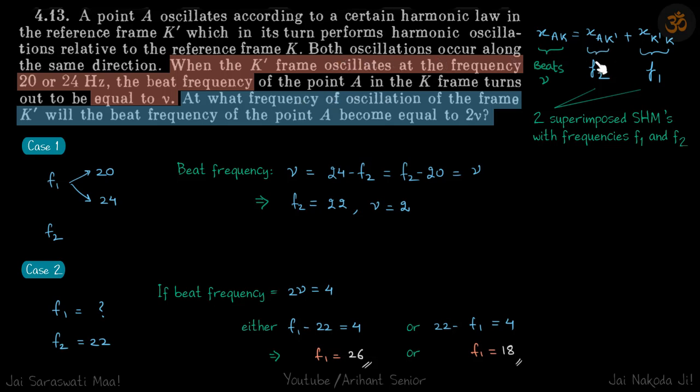This question has been written in complicated language, but it's quite simple. The frequency of A in K' frame is f2, frequency of K' frame with respect to K is f1. They've given that beats of A in K frame is ν. These are two superimposed SHMs with frequencies f1 and f2. Given f1 is 20 or 24, and the beat frequency is constant, f2 must be in the middle at 22. If f2 is 22, the gap between them is 2, so ν = 2. In the second case, the beat frequency doubles to 4, f2 is still the same, so f1 is either 4 more or 4 less: 26 or 18.